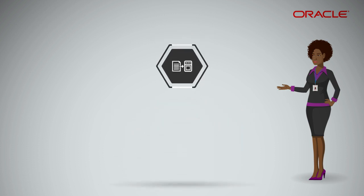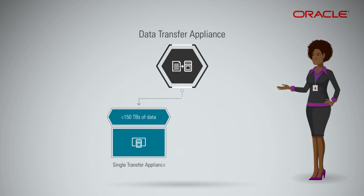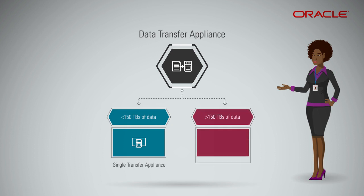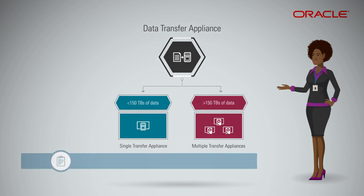Alternatively, you can use Data Transfer Appliance to transfer up to 150 terabytes of data using a single transfer appliance. If you need to transfer more than that, you can request multiple data transfer appliances. Make sure your tenancy service limits are set appropriately before requesting multiple transfer appliances.